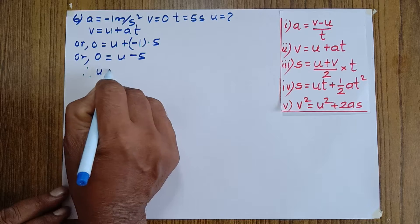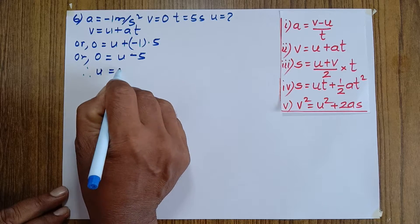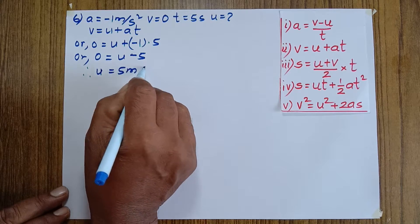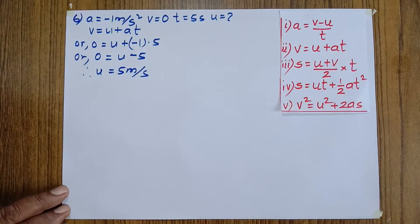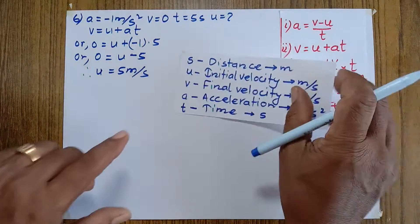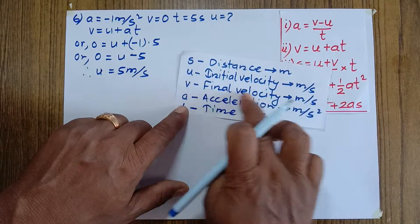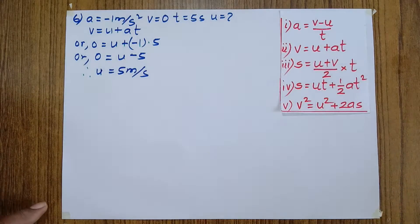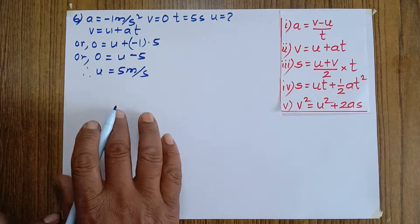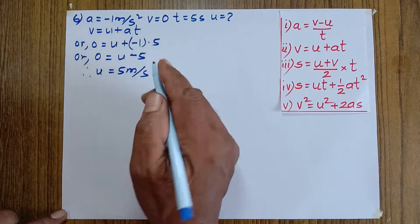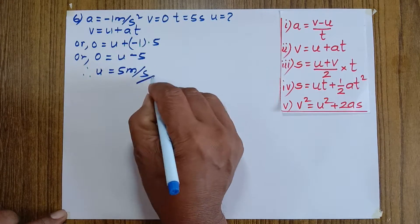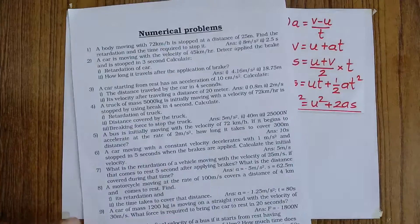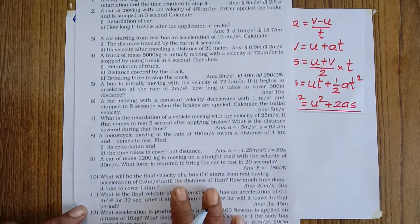Taking minus 5 to the left-hand side, u equals 5 meters per second. The unit of initial or final velocity is meters per second in the SI system. This is the answer to question number six.